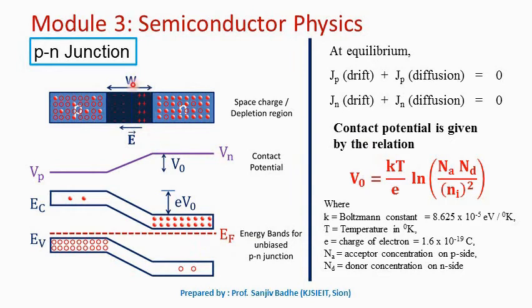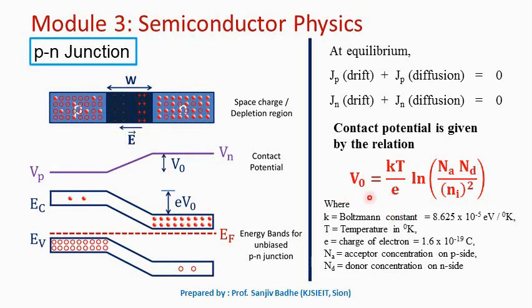The contact potential developed at the junction is given by: V_0 = (kT/e) × ln(N_a × N_d / n_i²), where k is Boltzmann's constant, T is temperature in Kelvin, e is the charge on the electron, N_a is the acceptor concentration on the P side, N_d is the donor concentration on the N side, and n_i is the intrinsic carrier concentration of the semiconductor. The contact potential V_0 is approximately 0.7 V for a silicon diode and approximately 0.3 V for a germanium diode.